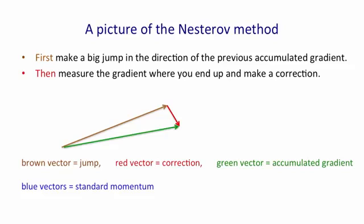We then take that accumulated gradient, we attenuate it by some number, like 0.9 or 0.99, multiply it by that number, and we now take our next big jump in the direction of that accumulated gradient, like that.